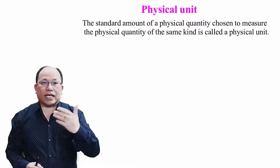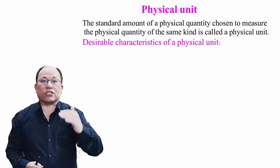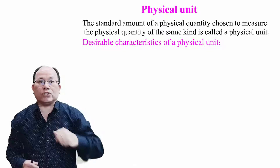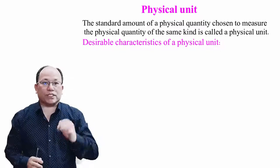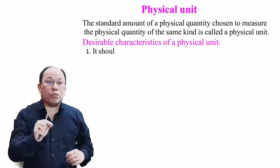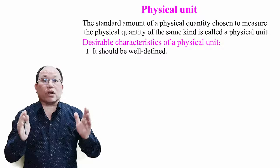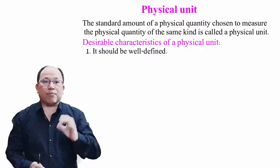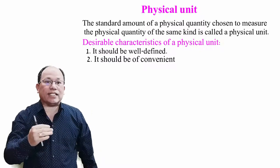For satisfying this condition, the desirable characteristics of a physical unit — the following points should be noted down. First point: it should be well defined. Second point: it should be of convenient size.